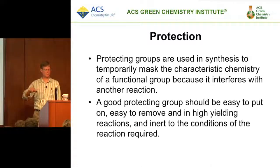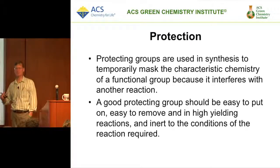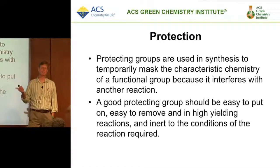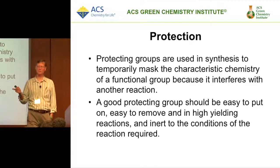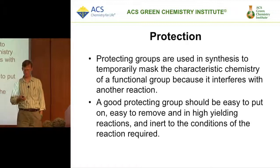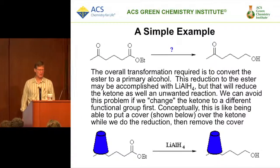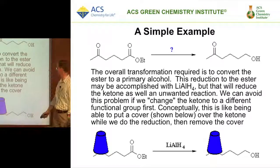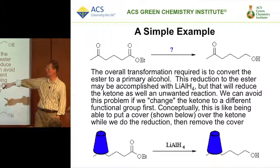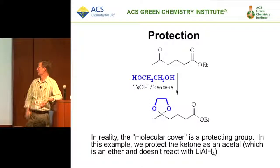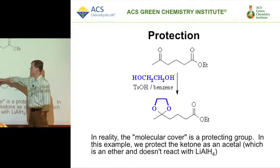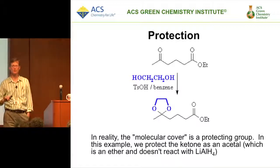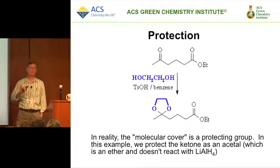Protecting groups avoid interference with another reaction. The idea that they are easy to put on and easy to take off is important. However, the issue is that using a protecting group violates the principle of atom economy — by definition it is not atom-economical. The classic example: we want to reduce an ester to an alcohol but we're afraid the ketone will react, so we protect the ketone. There are whole libraries of protecting group choices, and we can be greener in which one we select.